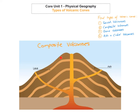The slopes are very steep, particularly close to the crater. However, at the base of the composite volcano the slopes aren't as steep — they're a lot more gentle, and that is a feature of it. An example of this would be Mount Etna in Sicily, Italy.